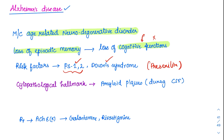The other cytopathological hallmark is accumulation of tau proteins, which further inhibit neurotransmission in the brain. These are the two major cytopathological hallmarks. What is the treatment? Acetylcholinesterase inhibitors are given — the common ones are galantamine and rivastigmine. This is the basis of Alzheimer's disease.